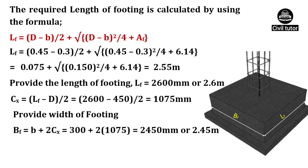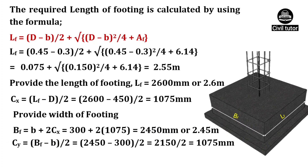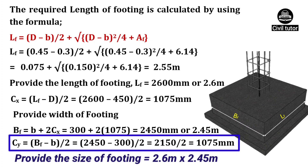The width of footing is calculated by using the formula BF = B + 2·CX. B is the width of column, already given as 300 mm, and CX is already calculated as 1075 mm. On substituting these values, width of footing will be equal to 2450 mm or 2.45 m. The projection of footing for bending about y-axis is given by CY = (BF - B)/2. BF is calculated as 2450 mm and B is equal to 300 mm. On substituting these values, CY will be equal to 1075 mm. Hence, we can provide the size of this footing equal to 2.6 m × 2.45 m.